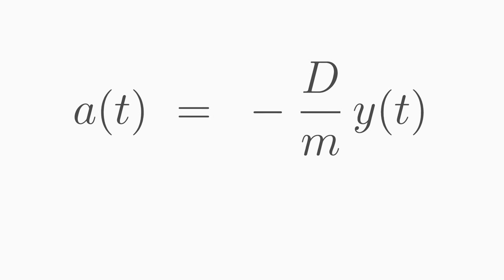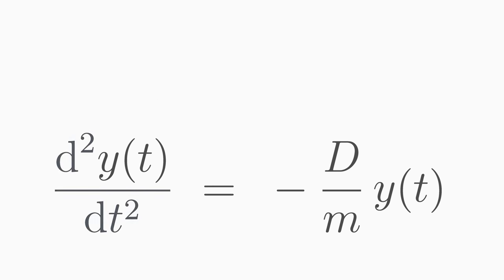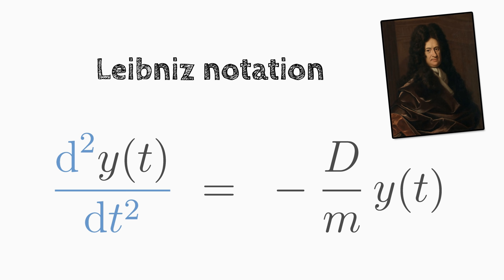Exactly when dealing with such future questions, differential equations come into play. We can easily show that the acceleration a is the second time derivative of the distance traveled, so in our case it is the second derivative of y with respect to time t. Now we have set up a differential equation for the displacement y. A differential equation, in short DQ, contains the searched function y as well as derivatives of this function. We have written down our differential equation in the so-called Leibniz notation, which you will often encounter in physics.